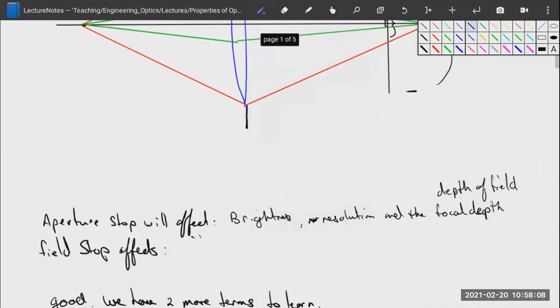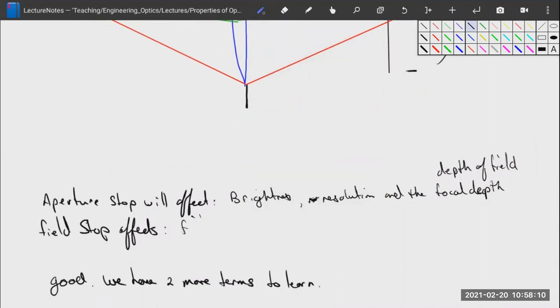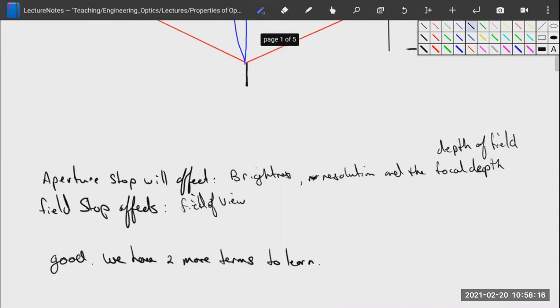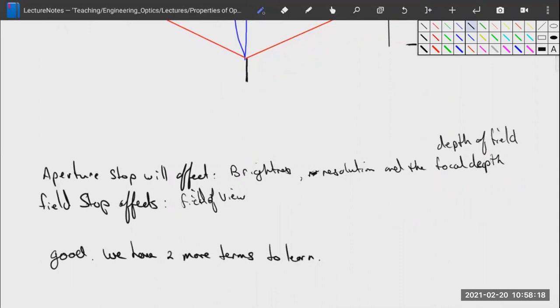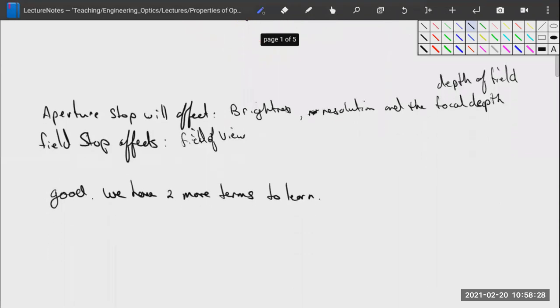That's why your aperture stop affects your depth of field. Field stop affects your field of view. The aperture stop is very important, which is why your camera spends a lot of time on it. If you buy an SLR camera, you'll notice it has an iris that you can adjust. We have two more terms to learn: entrance pupil and exit pupil.